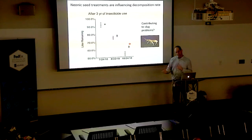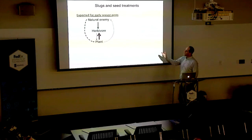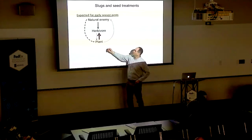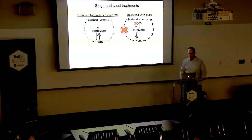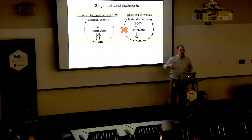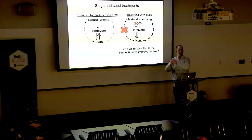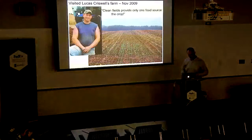The slug problem seems to be a two-part punch: fewer predators, and then residue that stays around longer making slugs more comfortable. When we have early season pests, we expect trophic interactions to occur to help regulate that pest. But what's happening when we have insecticide encoded on the seeds is that the effect of the natural enemy on the plant is being knocked out, because the plant is having a negative effect on the natural enemy. The insecticide in the plant is actually working against the system by taking out the predators. From an extension perspective, we want to figure out a way to help farmers re-establish these connections so that the problem can go away.